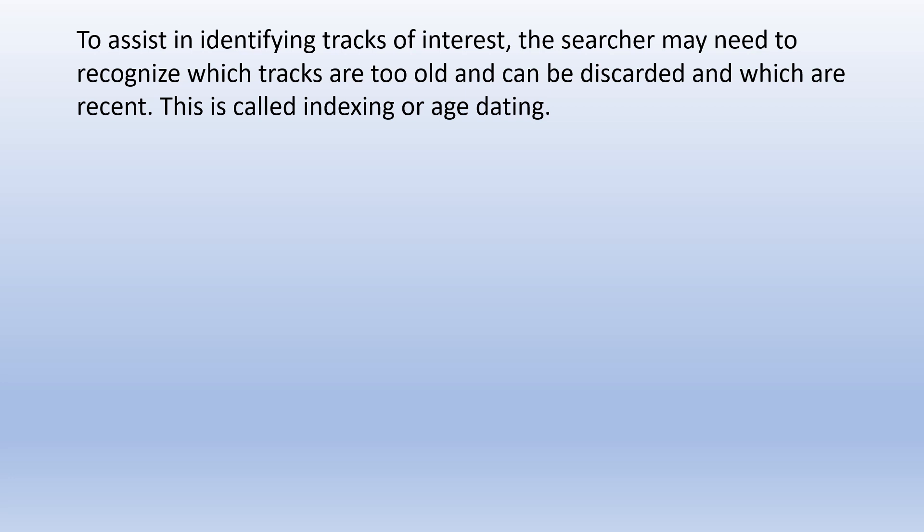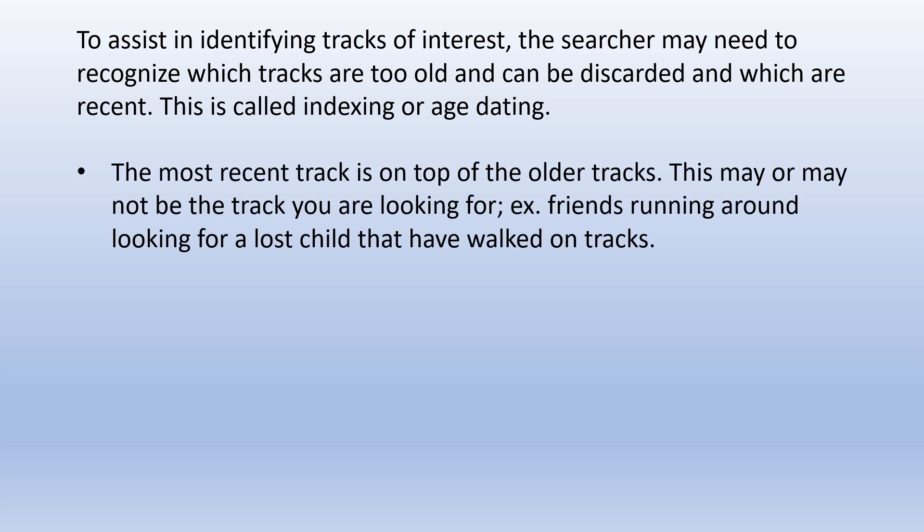To assist in identifying tracks of interest, the searcher may need to recognize which tracks are too old and can be discarded, and which are recent. This is called indexing or age dating. The most recent track is on top of the older track, but this may or may not be the track you are looking for. For example, if friends had been running around looking for a lost child, their recent tracks may not be the ones you want.